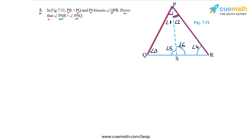We have to show that angle 6 is greater than angle 5. Here's the logic: angle 6 is an exterior angle for triangle PQS, so angle 6 equals angle 1 plus angle 3. Similarly, angle 5 is an exterior angle for triangle PSR, so angle 5 equals angle 2 plus angle 4. Now, angle 1 and angle 2 are equal.